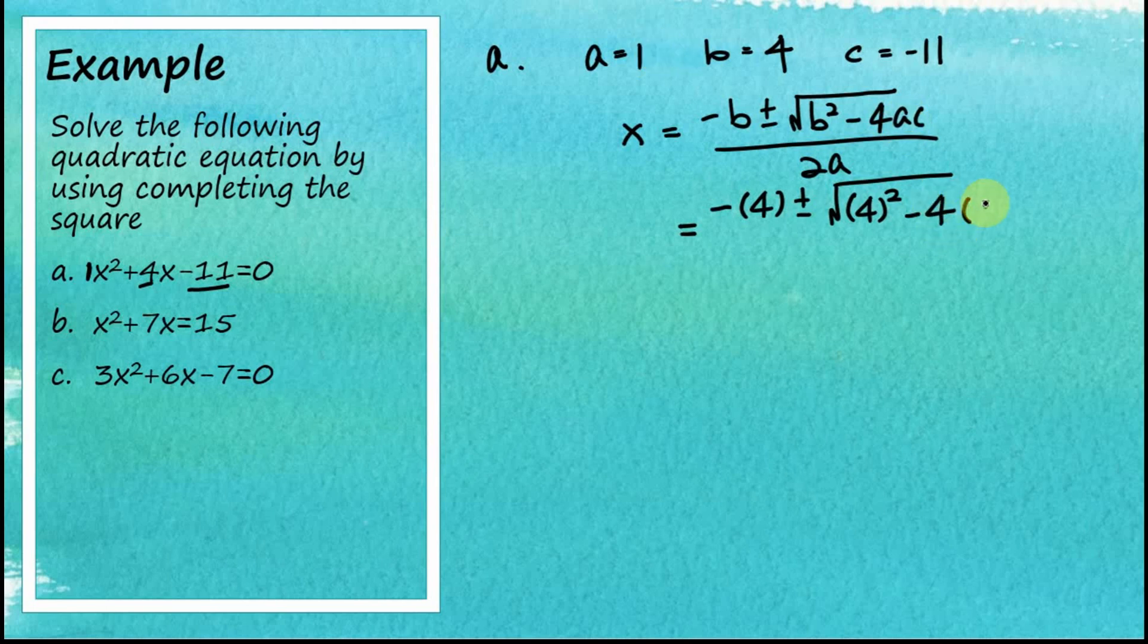a is equal to 1, and c equal to negative 11. Let's make this longer. And this whole thing is divided by 2a, and a equal to 1. So therefore, this is negative 4 plus minus square root.